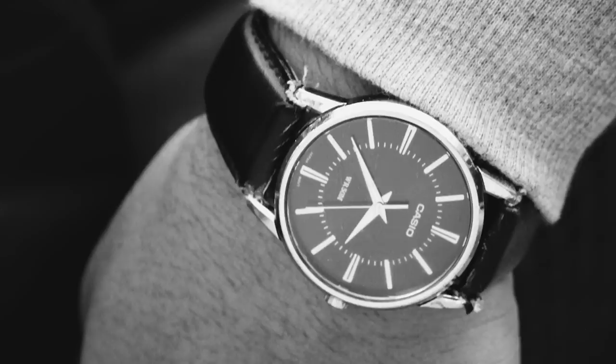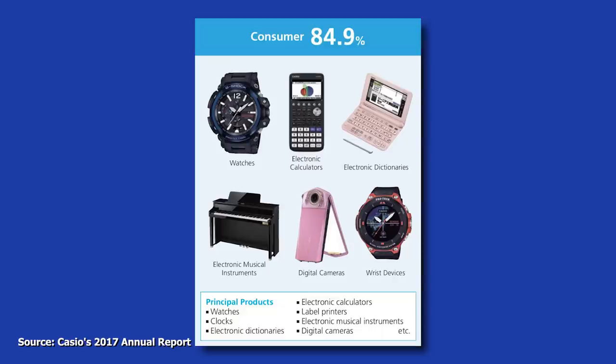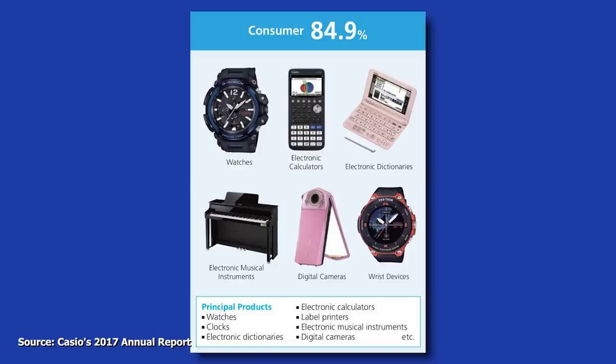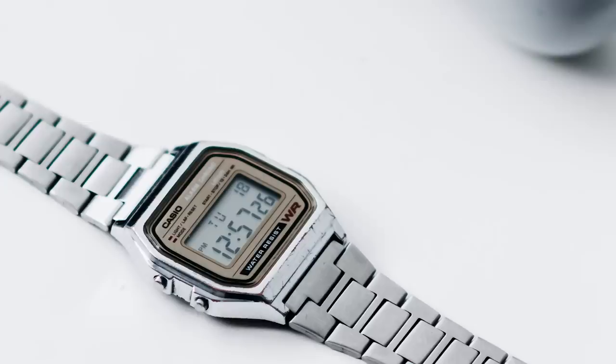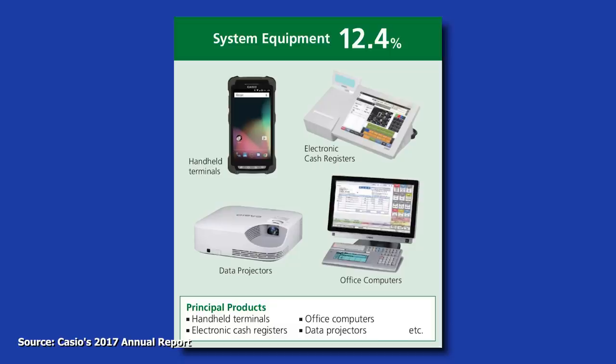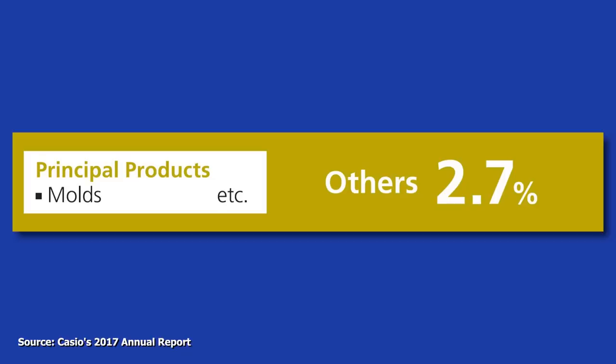Their sales are split into three segments. Last year, 85% of all sales came from their consumer segment. That includes the three products I've already mentioned, watches, calculators, and musical instruments. In addition to electronic dictionaries, label printers, digital cameras, and other wrist devices, among other things. They don't provide a breakdown any more detailed than this, but they do disclose that half of all their sales came from watches. So that would easily be their most successful product. 12.4% of sales came from their system equipment segment, which includes handheld terminals, cash registers, data projectors, and office computers, among other things. And then the third segment is only 2.7% of their sales, and it includes everything else.